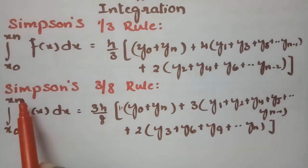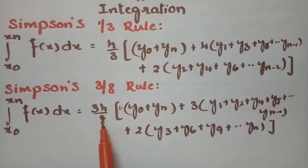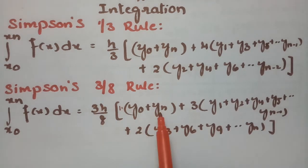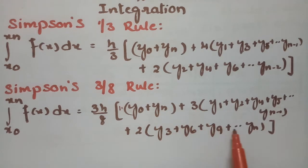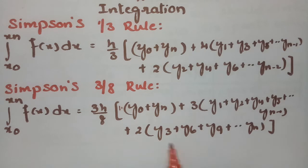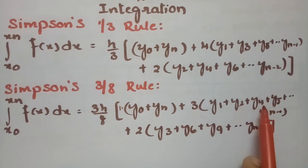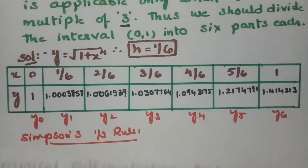For Simpson's 3/8 rule, the integral from x₀ to xₙ of f(x) dx equals 3h/8 times: (first ordinate + last ordinate) plus 2 times the sum of all multiples-of-3 ordinates (y₃, y₆, y₉, ...) plus 3 times the sum of all remaining ordinates.